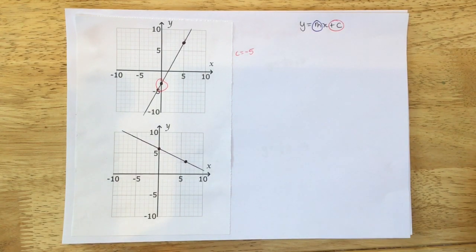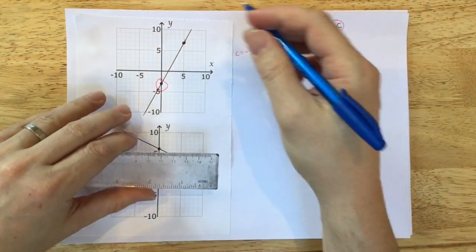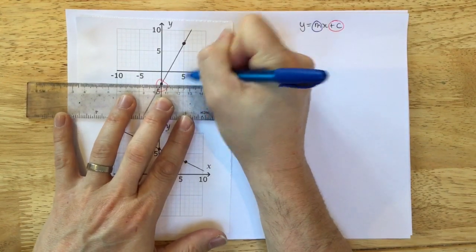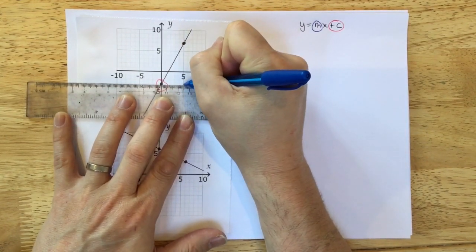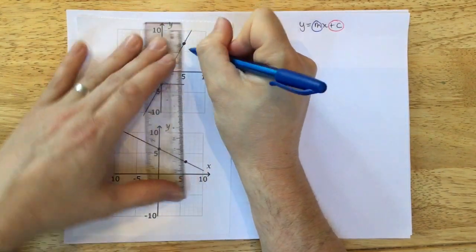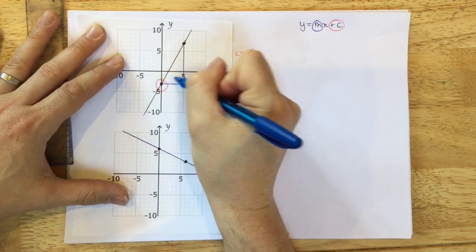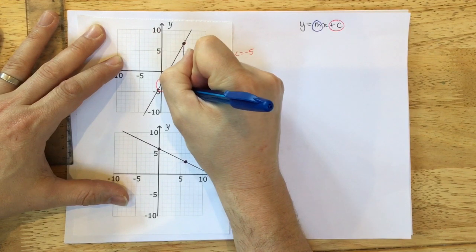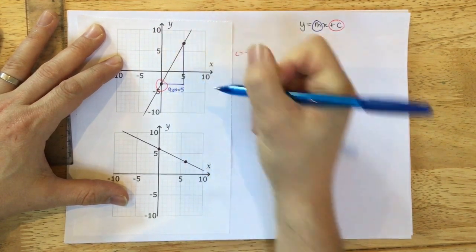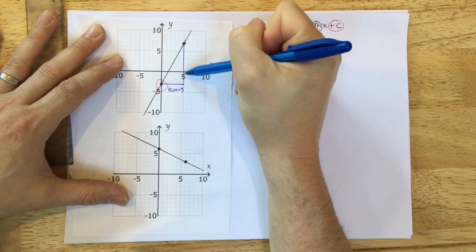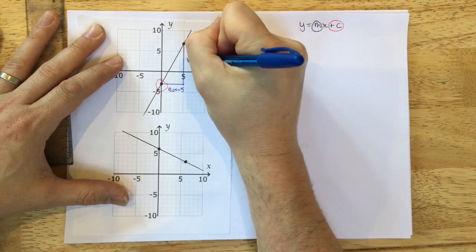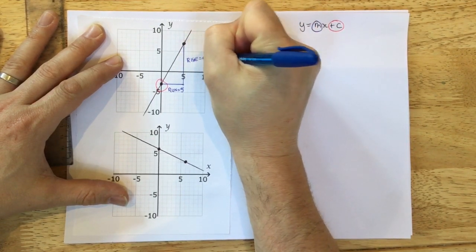But we also want to find the gradient. And we know that the gradient from a diagram is the rise over the run. So I've picked two points here that I know are on the line, and I'm just going to join them up. And how far does it go across? 1, 2, 3, 4, 5. So the run here is 5. The rise, it goes up 3 and then up another 7, so the rise here is 7.